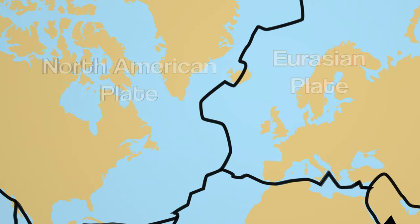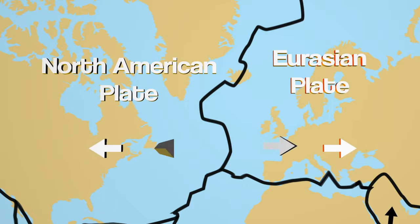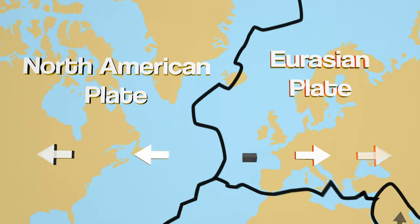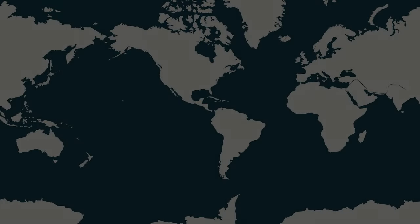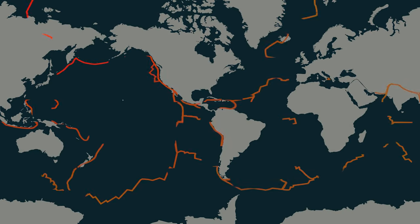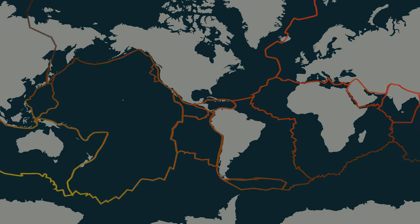Remember, these plates are all moving in different directions, thanks to the mantle convection happening underneath them. For example, the North American plate and the Eurasian plate are moving away from each other, which means the boundary between them is where magma is rising up and spreading outwards, moving them apart whilst creating new crust. As you'll see in our next video, the real action happens along the edges of the tectonic plates. Stay tuned for that.